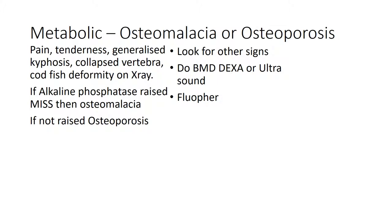For metabolic conditions — osteomalacia or osteoporosis — there is generalized pain, tenderness, generalized kyphosis, and possibly a collapsed vertebra or codfish deformity on X-ray. If alkaline phosphatase is raised and there are multiple idiopathic symmetrical pseudofractures, diagnose osteomalacia; otherwise, osteoporosis. Bone mineral density can be assessed by DEXA or ultrasound. Fluorochrome labeling is done by tetracycline fluorescence — less than 10 fluorochrome labels per high-power field in the marrow indicates osteoporosis.